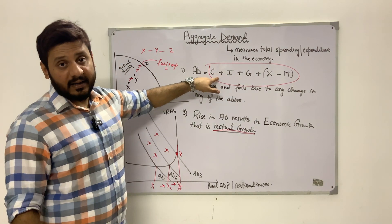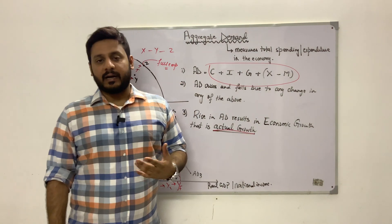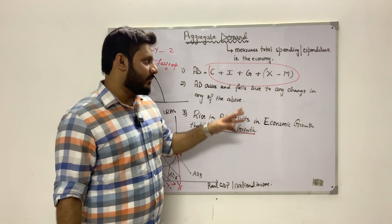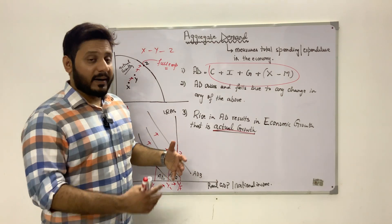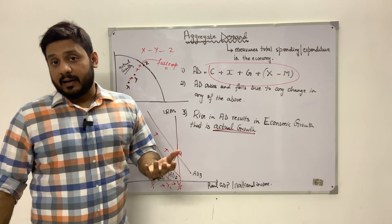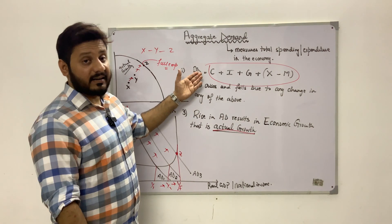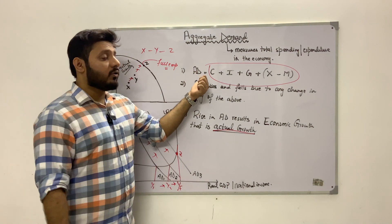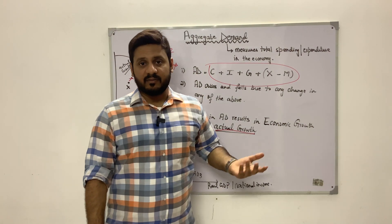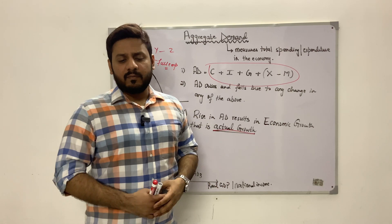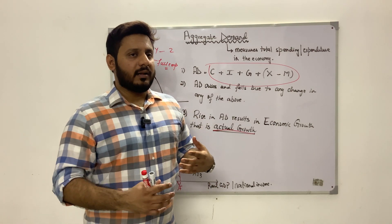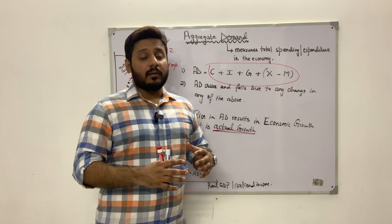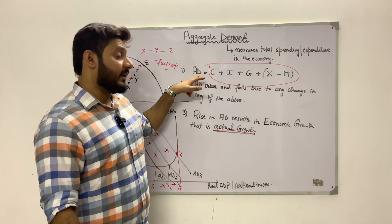Investments may rise because of a fall in interest rates. A fall in interest rates also increases consumer spending, because lower interest rates reduce the cost of borrowing, making borrowing cheaper. There is more borrowing by consumers and firms, so firms invest more in buying machinery, equipment, expanding factories, and buying raw material — increasing investments and therefore aggregate demand.